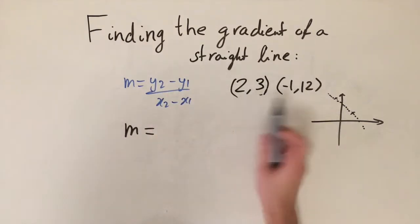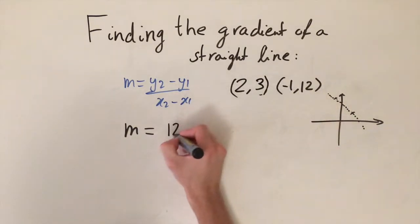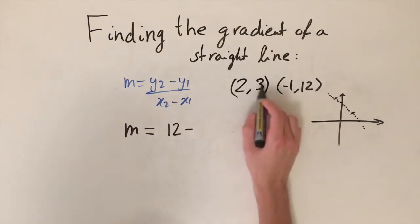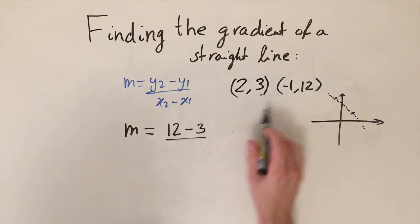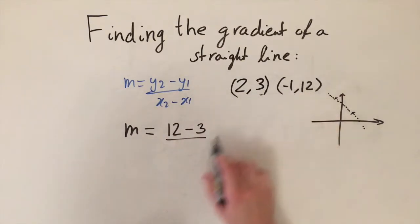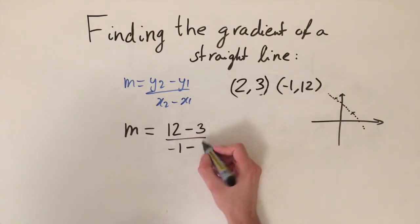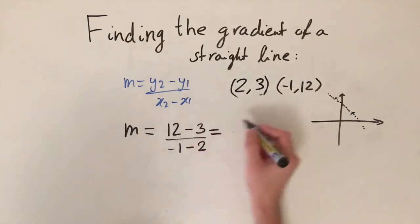That's what we want to work out and we're going to use this formula right here. So the gradient is given by y2—now it doesn't matter which one you pick first, let's do this one as x2 and y2—so 12, that's the y component here, minus the y component in the other points, so minus 3, and then we divide this by the x component in the first coordinate corresponding to 12, so minus 1, subtracted by minus 2, that's the other x coordinate.